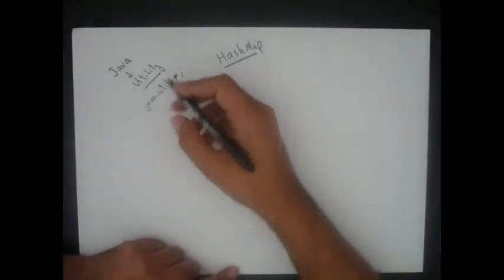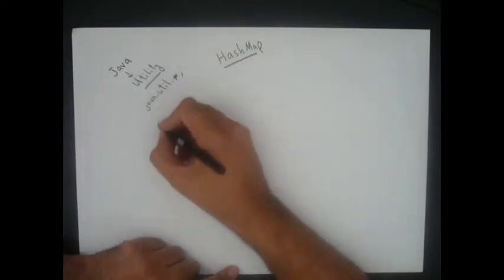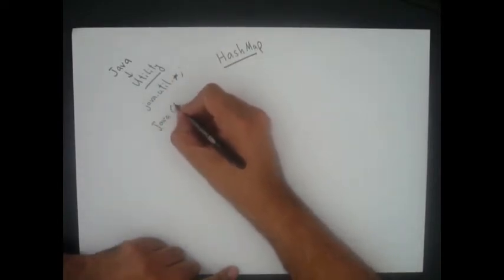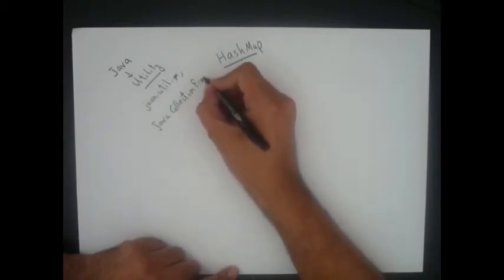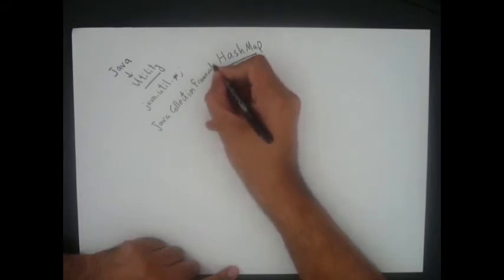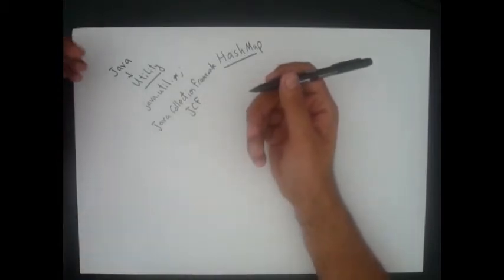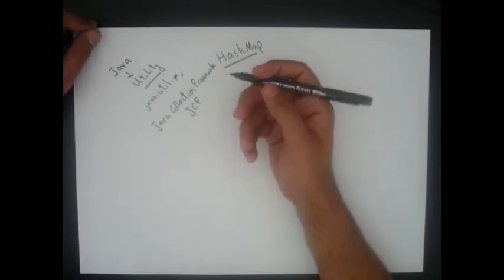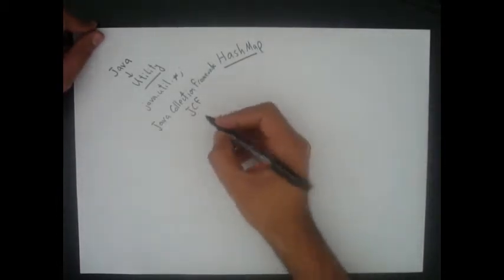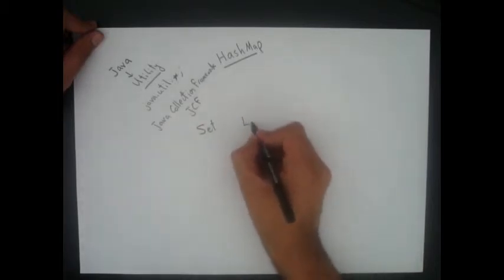And this is the area where Java Collection Framework resides. So we have something called Java Collection Framework, JCF, and within the JCF we have a lot of data structures and interfaces, major interfaces like set interface and list interface.